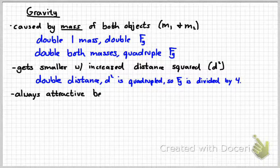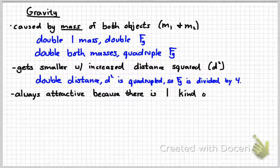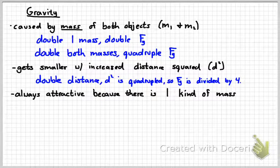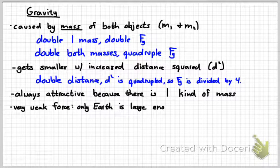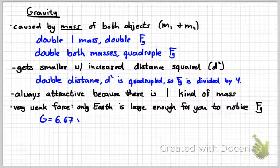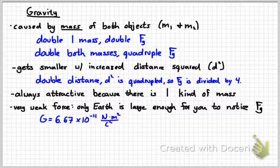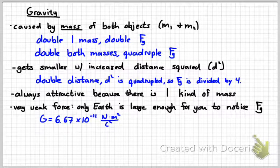Gravity is always attractive because there's only one kind of mass. If there were more than one kind of mass in the universe, then gravity would be really different. Gravity is a very weak force. The only object that has enough mass for you to notice its gravity is the Earth. The sun and the moon have some very small effect on the Earth, but not really on you.